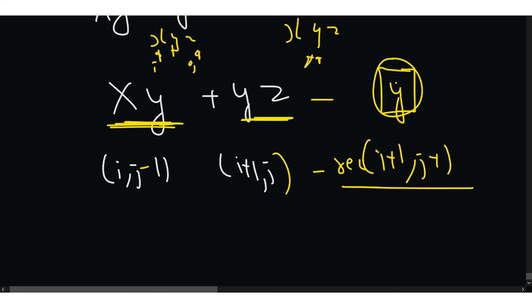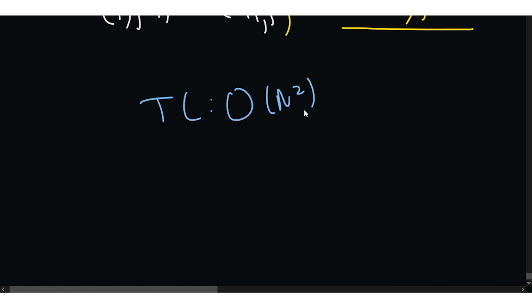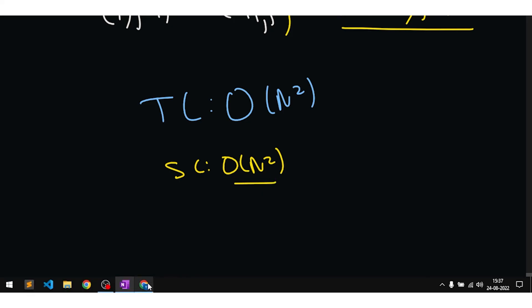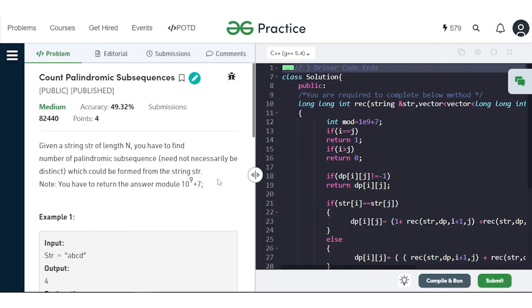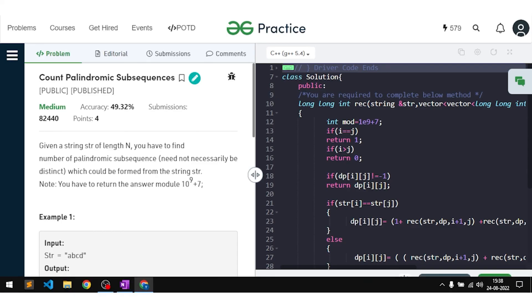The time complexity is O(n²) since we iterate through the string with a 2D DP of size n×n, and the space complexity is also O(n²). If you understood this question, make sure to hit the like button, comment 'understood,' and subscribe to the channel. Thank you for watching.